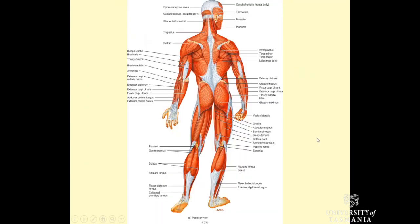This is the posterior surface. You can see the muscles at the back here. These include some of the shoulder muscles — the deltoid, the latissimus dorsi, the gluteus maximus, and the hamstrings. We've got the gastrocnemius and soleus muscle, which then continues on as the Achilles tendon. On the posterior surface of the upper limb, we've got our triceps muscles, and then the flexors and extensors.